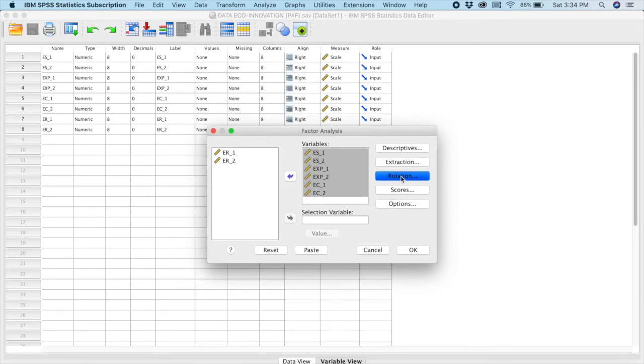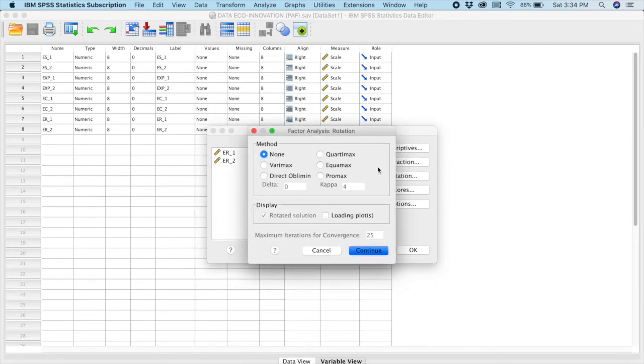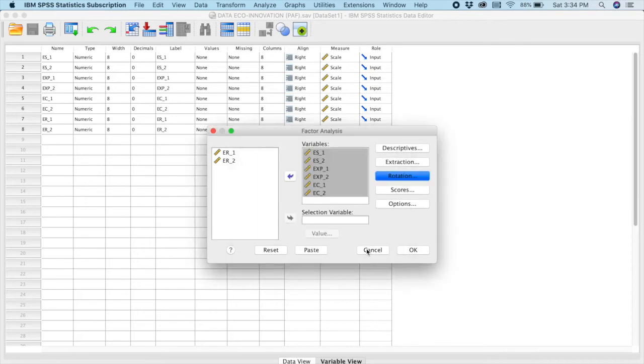Next, we go to Rotation. Now for Rotation, we're going to use Oblique Rotation. Therefore, we have two choices, either Direct Oblimin or ProMax. And we will go for ProMax. You click Continue, and OK.